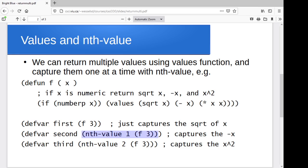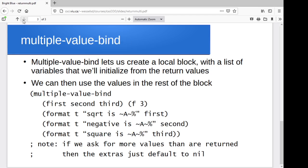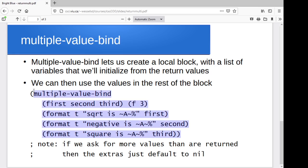What if you want to grab all three of the return values? That's where the multiple-value-bind comes in. So multiple-value-bind, you make your function call and you give a list of local variables you want to store the return values in. So in this case, first, second, third, F of three, it would return the first return value in first, the second one in second, the third one in third. And then you can do whatever you want with them in the rest of the multiple-value-bind block.